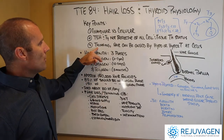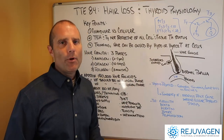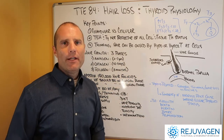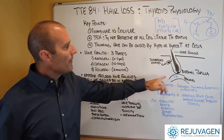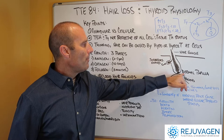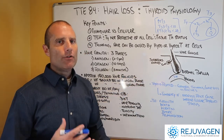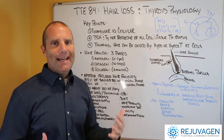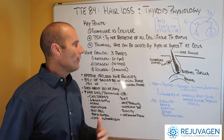Thinning hair can be caused by too much or too little thyroid hormone getting to those hair follicles — either one can cause thinning or hair loss. The hair follicle grows from something called the dermal papillae, and there's also a sebaceous gland there. The hair follicle goes through three phases. The first phase is called the anagen phase — that's the growth phase — and thyroid hormone plays a key role in that growth phase.